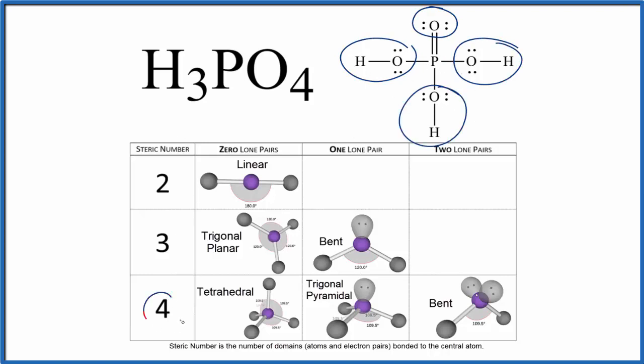So our steric number is four, and all of these are covalently shared bonds. There's no lone pairs. Zero lone pairs, tetrahedral molecular geometry. We'd expect the bond angle to be 109.5.